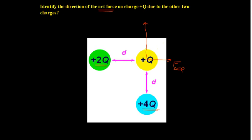Drawing the arrows: F_2q has a certain size, and F_4q is drawn as double that size. The resultant net force will be shifted a little to the upper-left direction. It won't be exactly 45 degrees — it will be closer to F_4q because that force is bigger, pulling the resultant more toward its side.